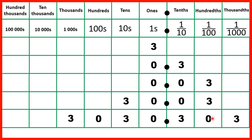Placeholders don't have any value in themselves, but they give the other digits value. They make sure that the other digits are in the right place value columns — that's why they're called placeholders.